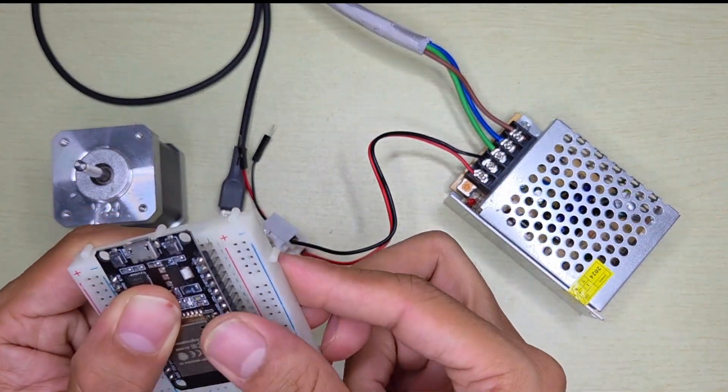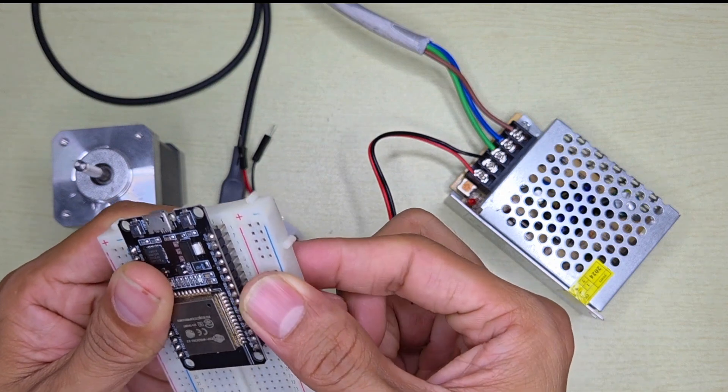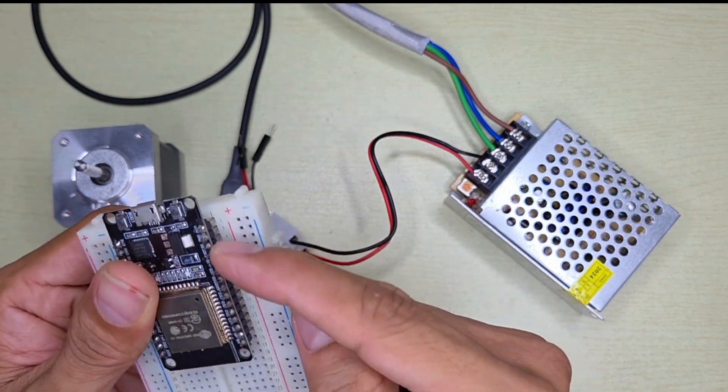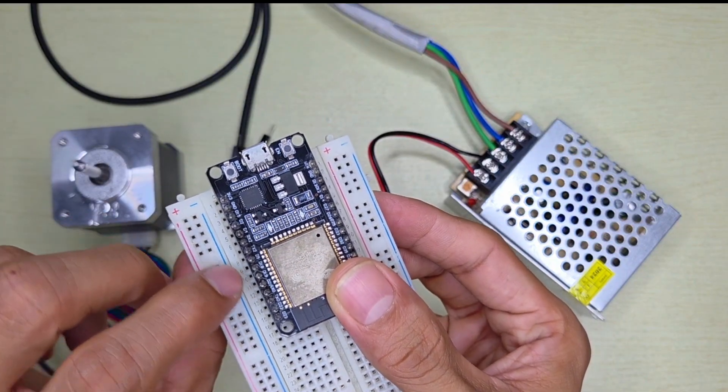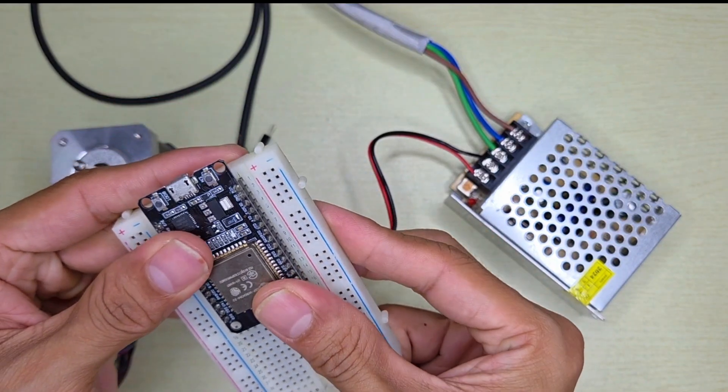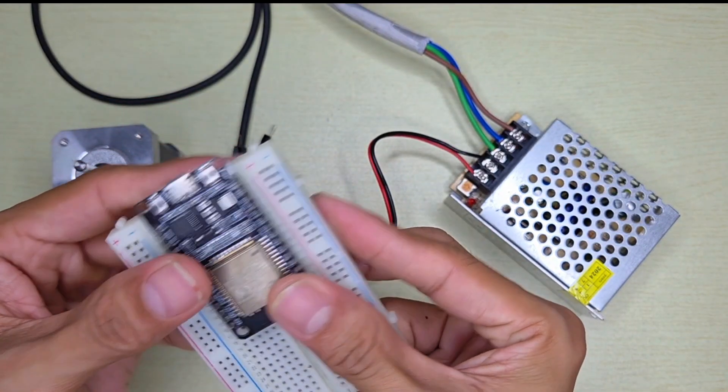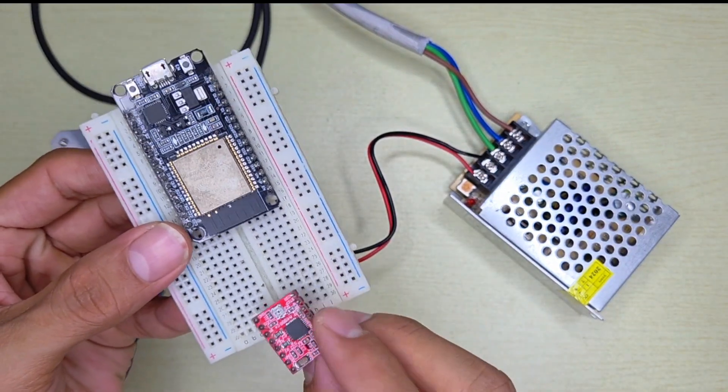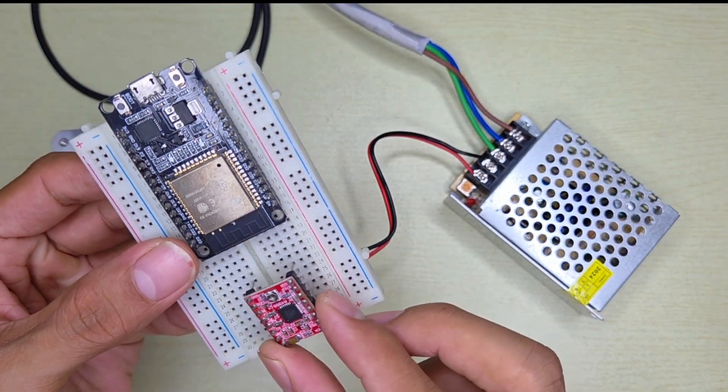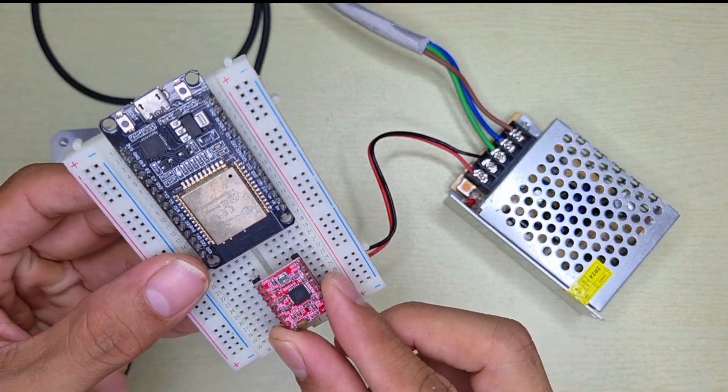ESP32 is not friendly to the breadboard because once we plug it in here, this side is already full and we're not going to use any of these pins here. We're going to use pins from this side. So we still have one pin left to slot here. I'm going to put the stepper motor driver on this side.